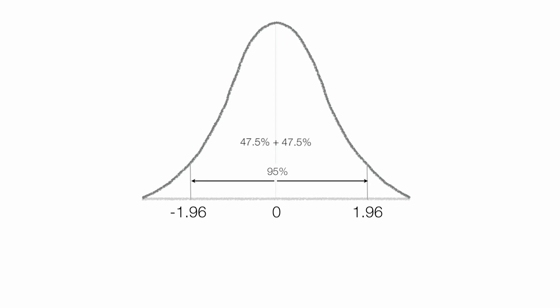I can add these two together. So the likelihood an observation is between negative 1.96 and 1.96 is 95%.